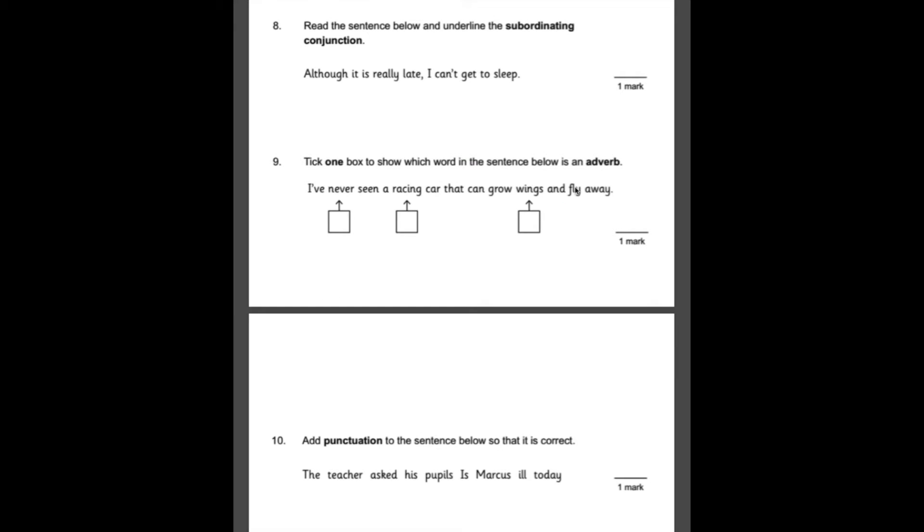Number eight, read the sentence below and underline the subordinating conjunction. It's really important that you memorize a good list of subordinating conjunctions as well as coordinating conjunctions for your SATs because they tend to come up quite a lot. So it's always good if you can memorize them. So in this case, the subordinating conjunction is the word although. I'll put a link in the description to a list of all the conjunctions that you need to know for your SATs.